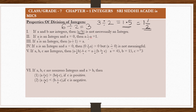Property 2: if a is an integer and a ≠ 0, then a ÷ a = 1. Any integer divided by itself gives 1. For example, 7 ÷ 7 = 1, and (−8) ÷ (−8) = 1 — same signs give a positive result. Property 3: if a is an integer, then a ÷ 1 = a. Any integer divided by 1 always equals the integer itself, whether positive or negative.